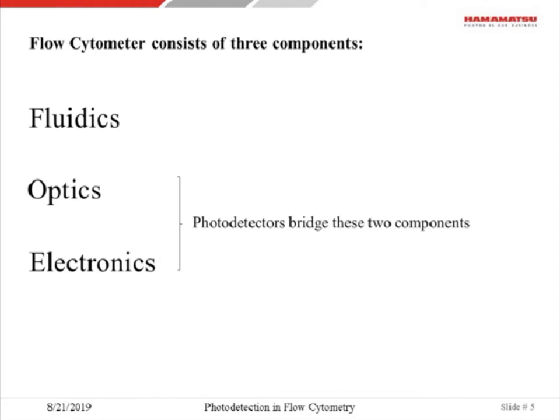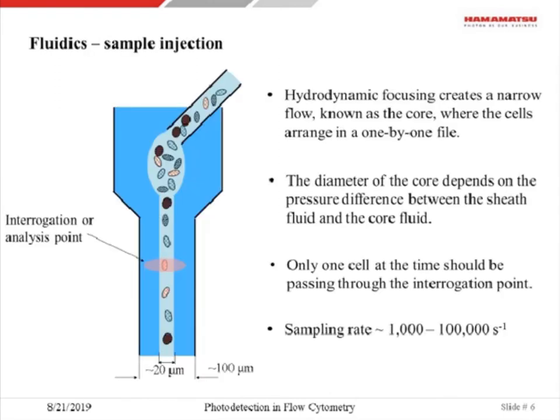A modern flow cytometry system consists of three fundamental basic elements: fluidics, optics, and electronics. A photodetector bridges the two last components, optics and electronics. The role of a photodetector is to convert a light signal to an electrical signal. The central component—perhaps the heart—of flow cytometry is the flow cell. In the flow cell, we have a sheath fluid flowing, shown in deep blue. Into that sheath fluid, a different fluid with cells suspended is injected. Due to hydrodynamic focusing, the cells in the flow are organized in a file.